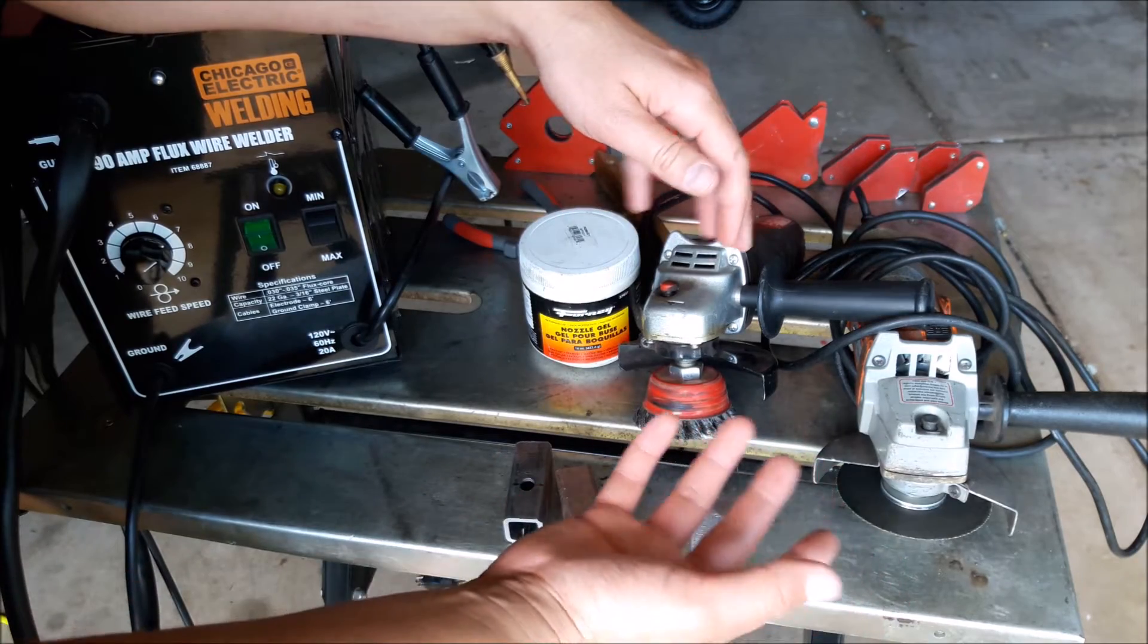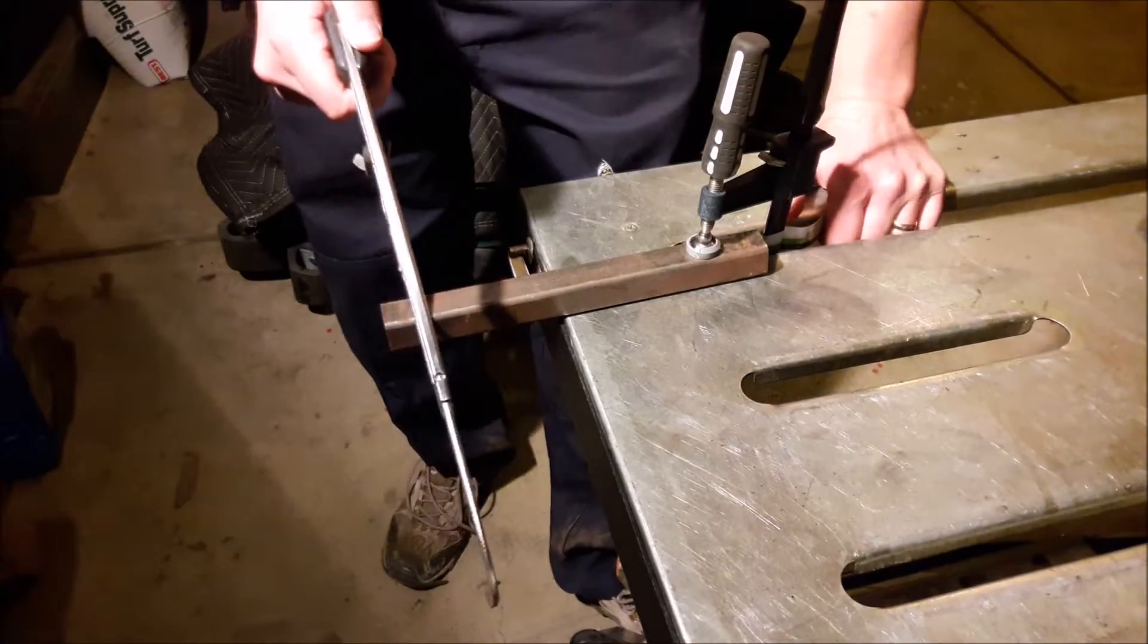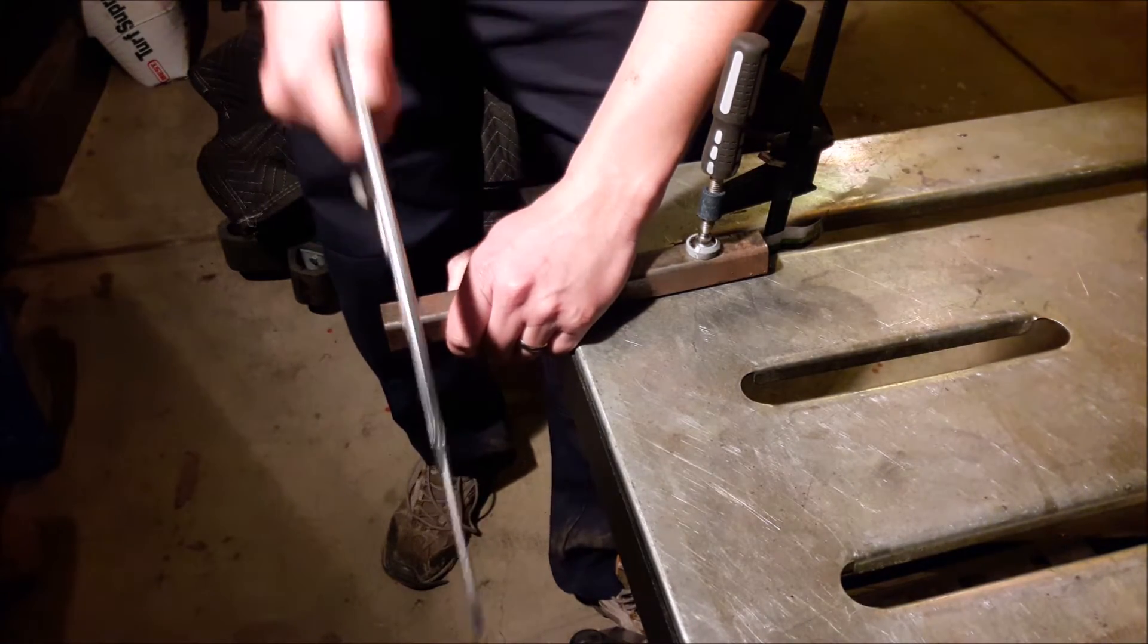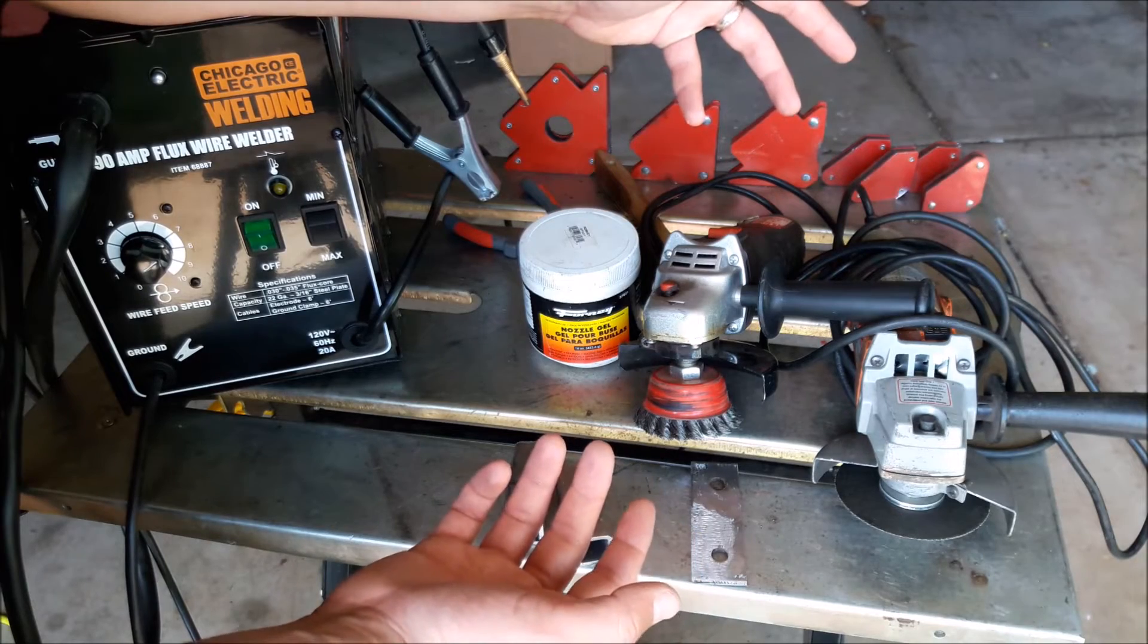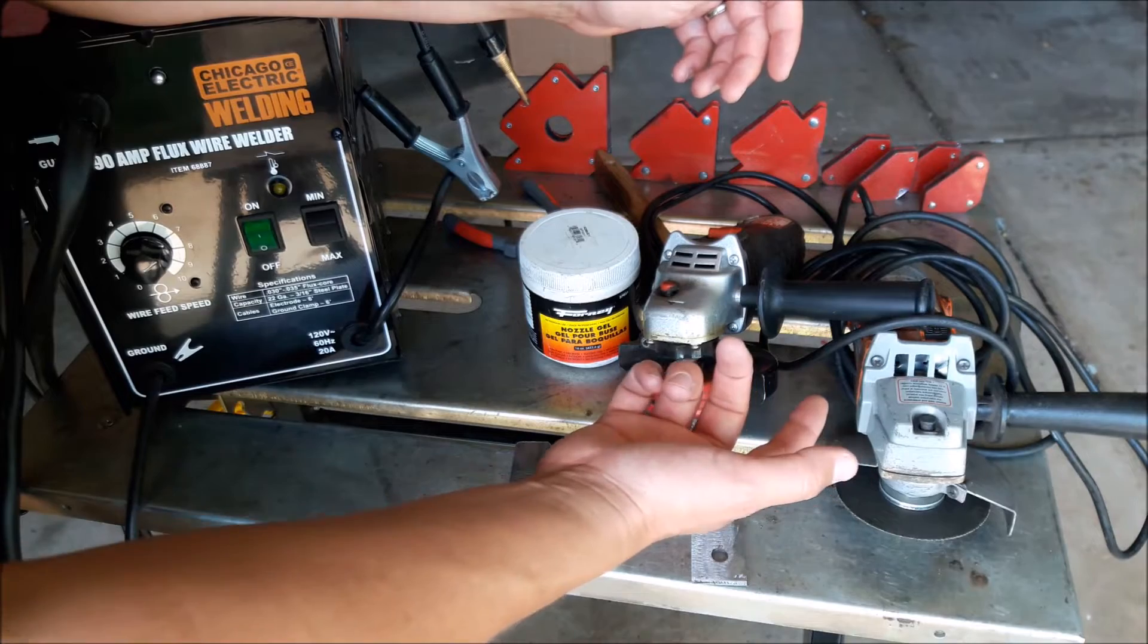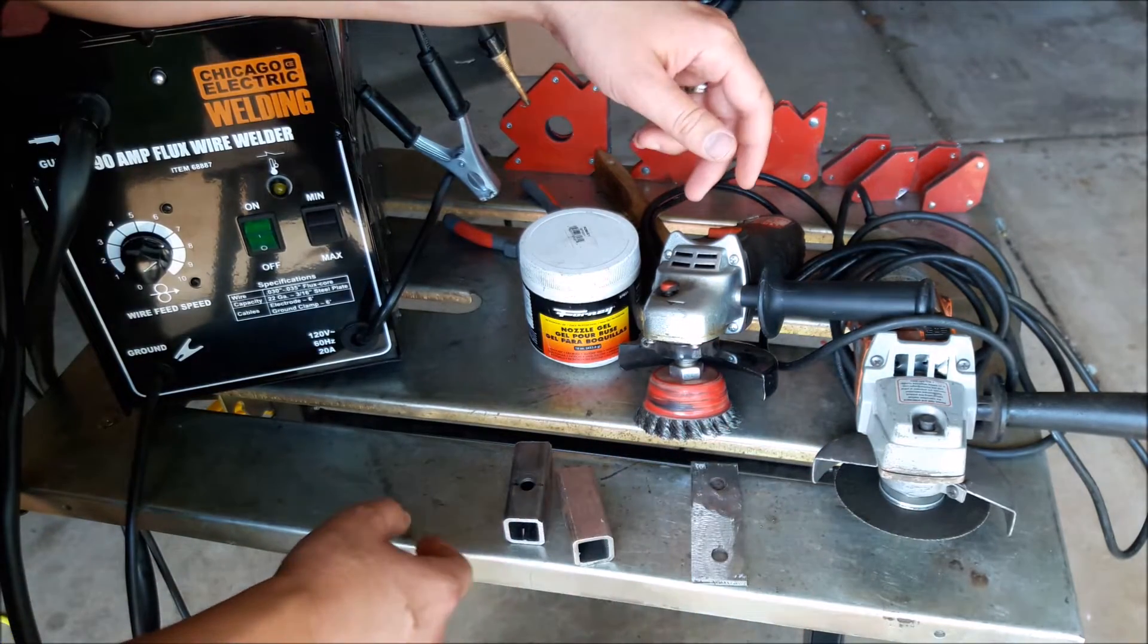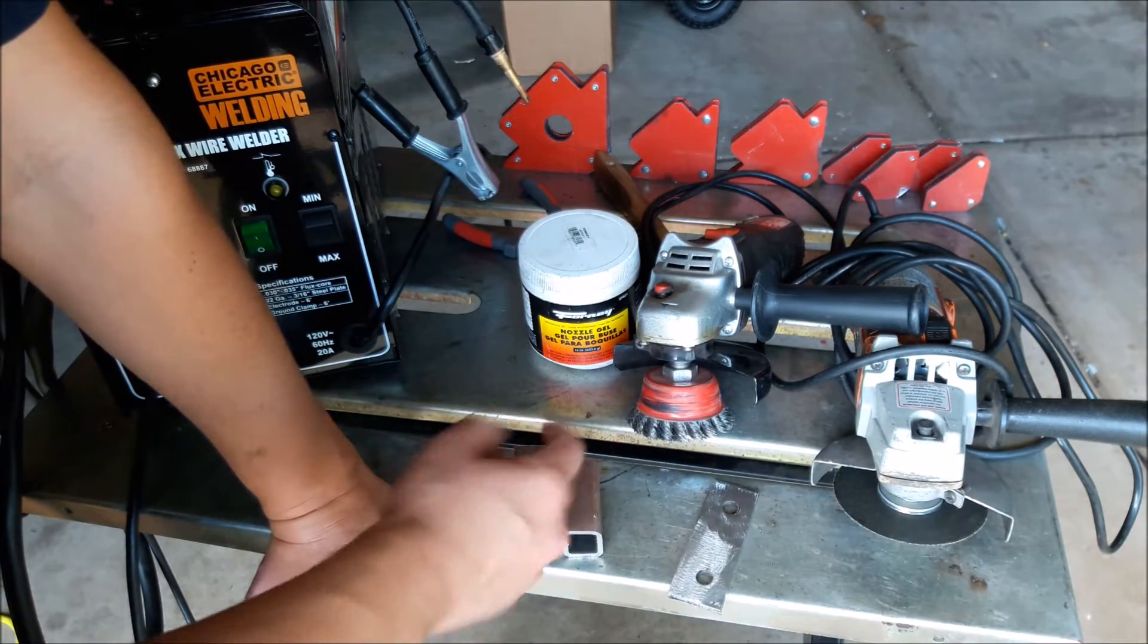So you can use the old fashioned hacksaw or save a year and a half of your life and pick up a $10 angle grinder with a pack of cut off wheels. I have two of them for the sole purpose of not having to switch these heads out.